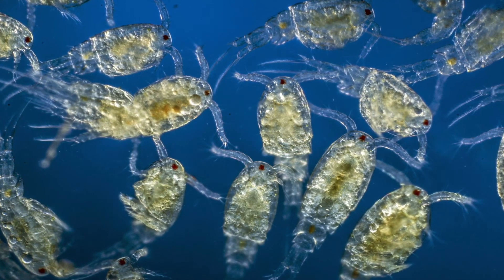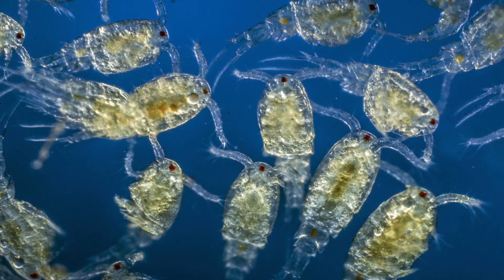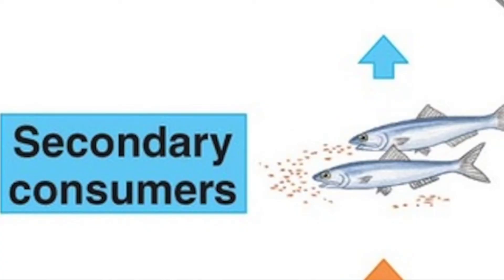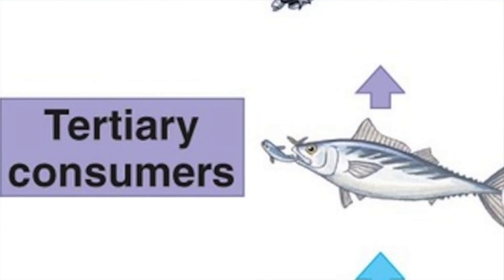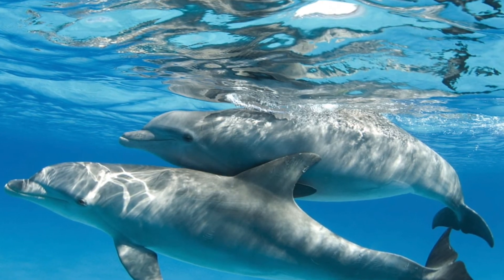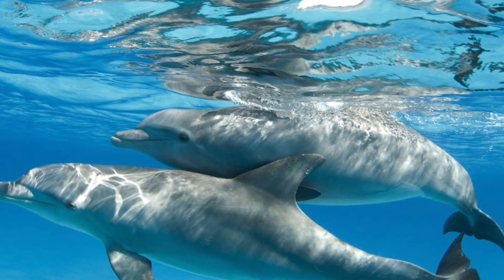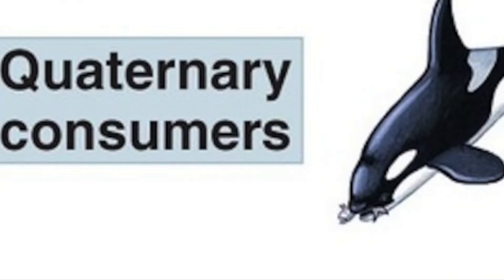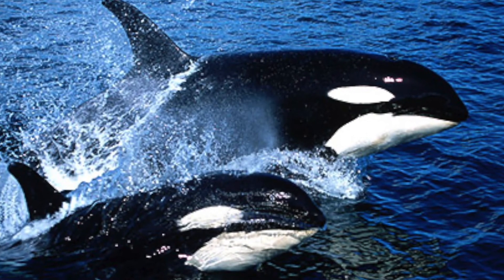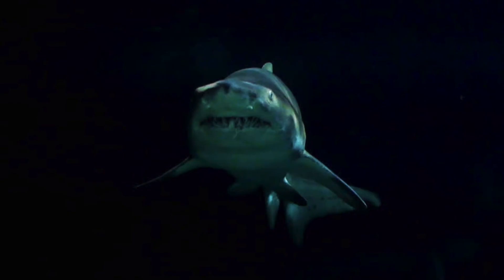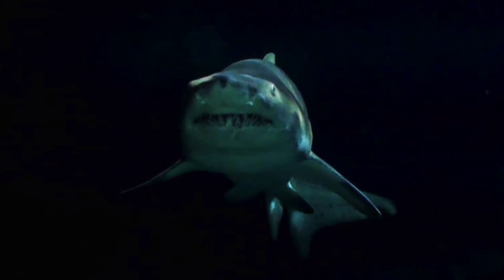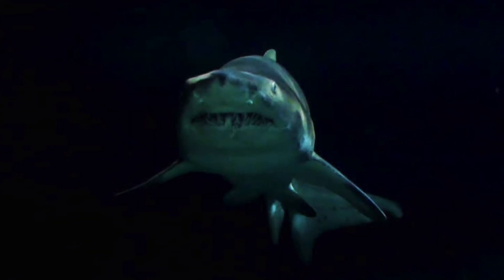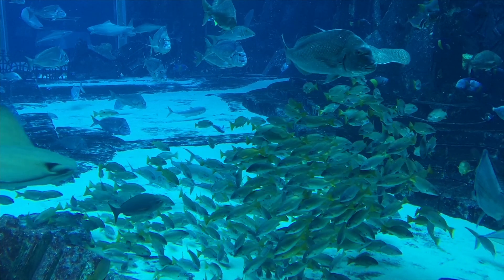These primary consumers are then eaten by a secondary consumer like herrings or sardines. These secondary consumers are then consumed by a tertiary consumer like whales or dolphins. Finally, these tertiary consumers can be eaten by a quaternary consumer like orcas or sharks. In the underwater world, predators like sharks and orcas are at the top of this chain, preying on the animals below them.